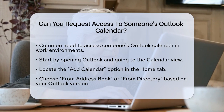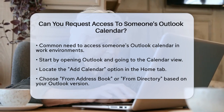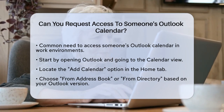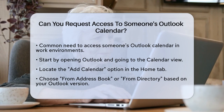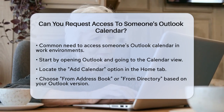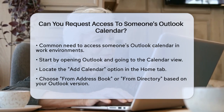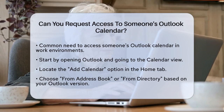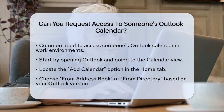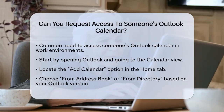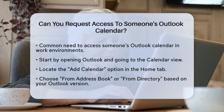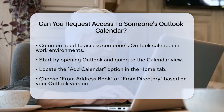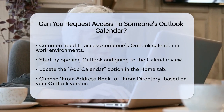To request access to someone's Outlook calendar, you need to follow a few simple steps. First, open Outlook and navigate to the calendar view. Here, you'll find the Add Calendar option in the Home tab. Click on Add Calendar and then select From Address Book or From Directory, depending on your version of Outlook.